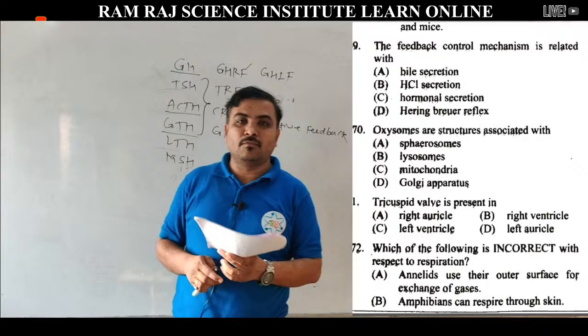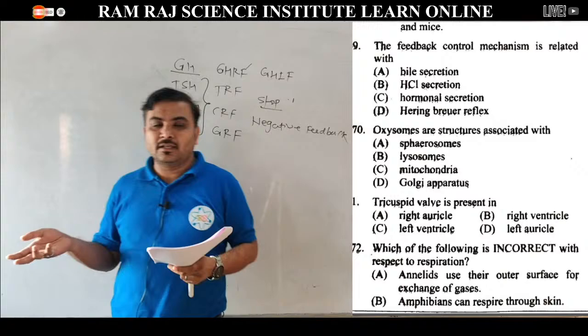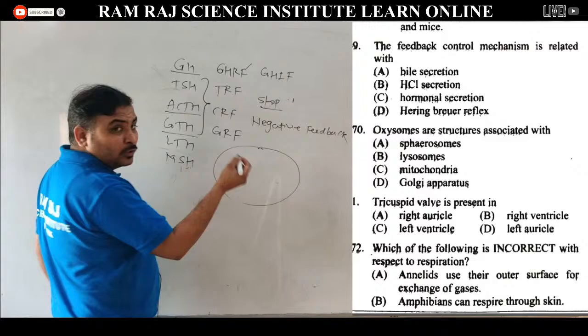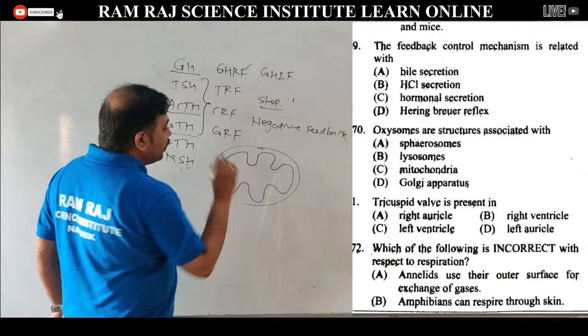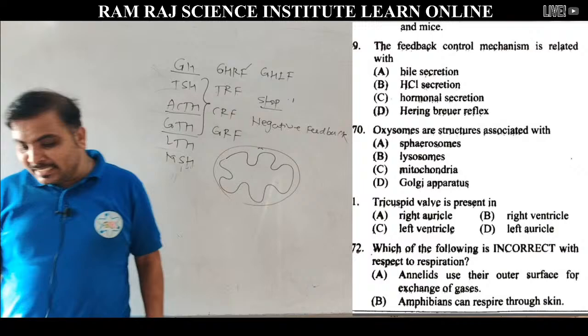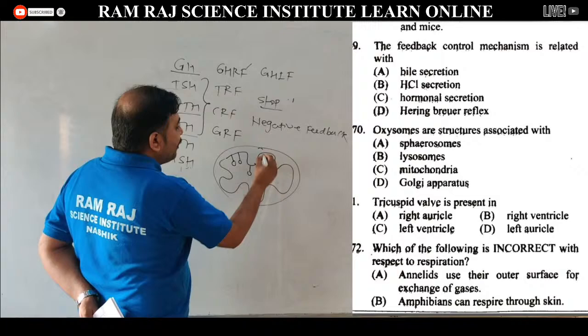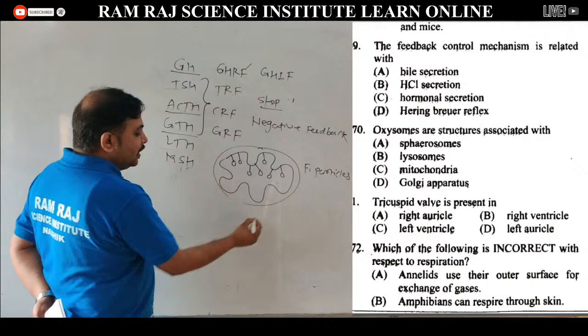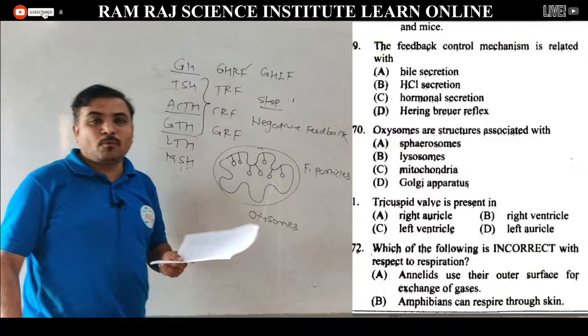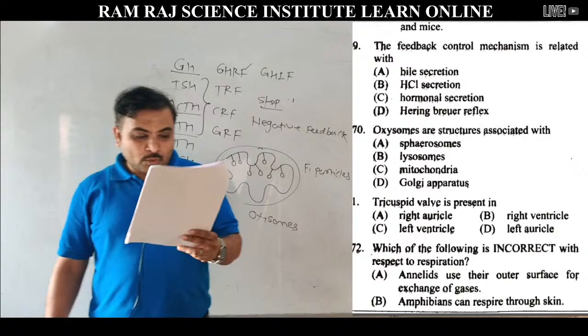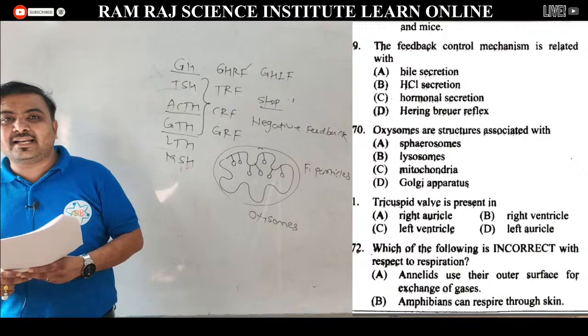Question 70: oxyzomes are structures associated with. Mitochondria का outer membrane smooth and unfolded होता है. Inner membrane folded होता है — इन folds को cristae बोलते हैं. Cristae के उपर जो structures होते हैं उन्हें F1 particles, oxyzomes, या elementary particles बोल सकते हो. तो correct answer for question 70 is mitochondria.